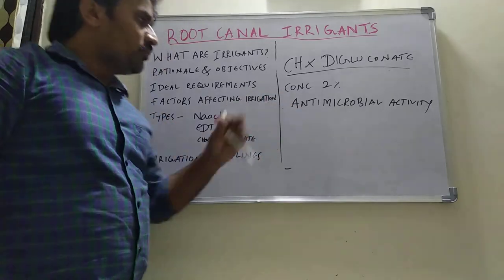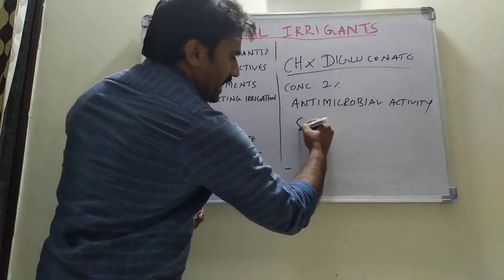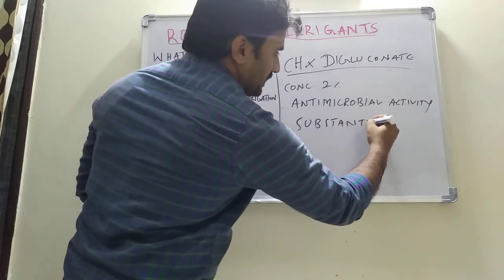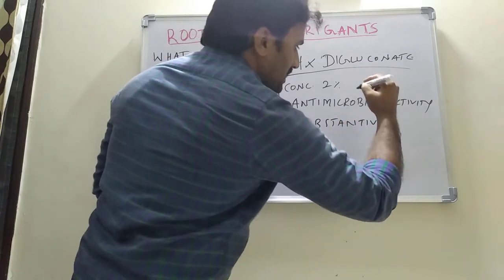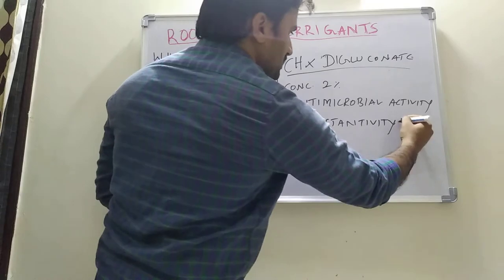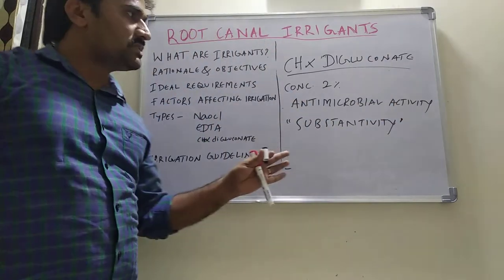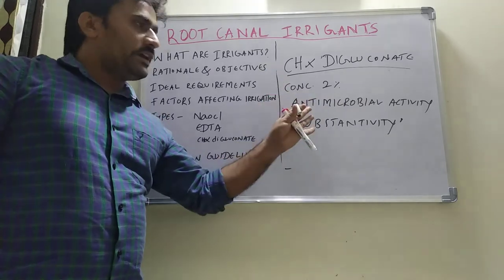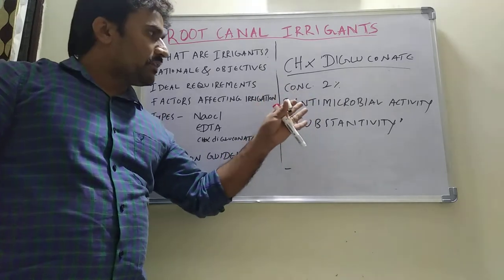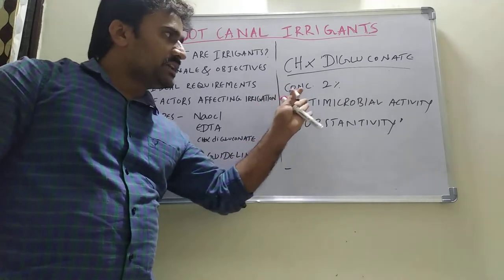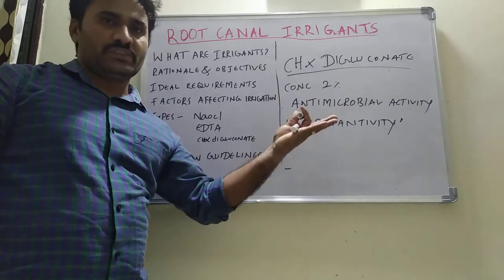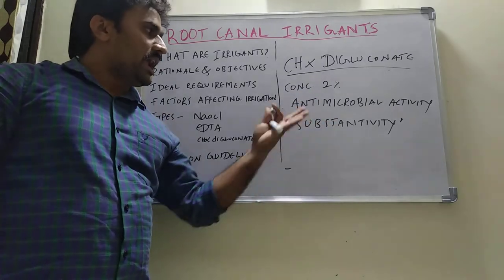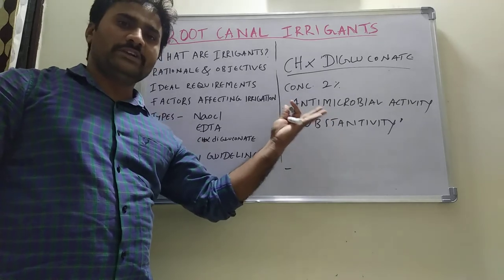One important property of chlorhexidine digluconate is substantivity — meaning sustained release action. Once you irrigate with chlorhexidine digluconate, the antimicrobial effect persists for some more time. It remains active and maintains antimicrobial activity for 5 to 6 hours.